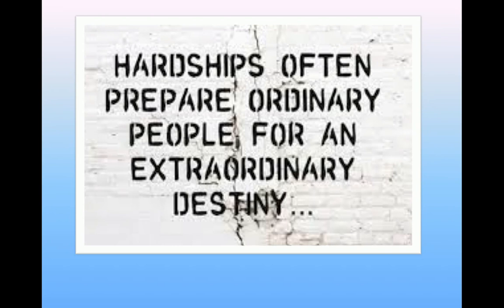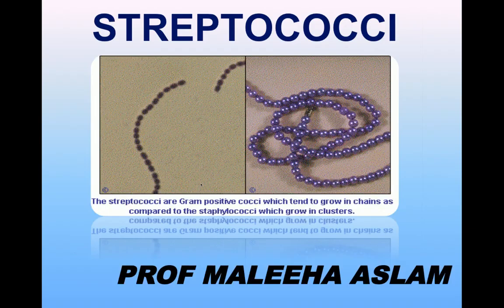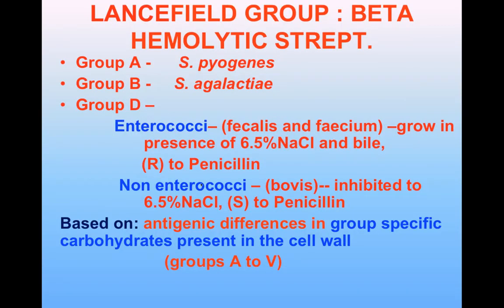One of the most important characteristic features of streptococci is the presence of hemolysis on blood agar. Some produce alpha hemolysis, others produce beta hemolysis, and then there is a third group which are non-hemolytic and are thus known as gamma hemolytic organisms.